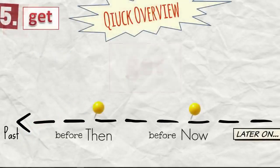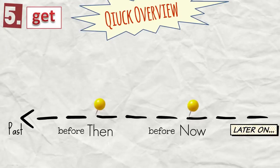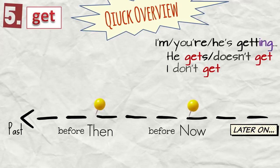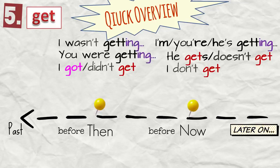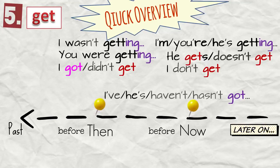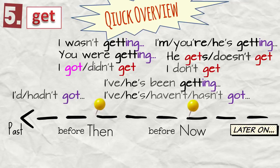Get. Quick overview again. I get. I don't get. He gets. He doesn't get. I'm getting. You're getting. He's getting. I got. I didn't get. I was getting. I wasn't getting. You were getting. I've got. He's got. I've been getting. He's been getting. I'd got. I hadn't got. I'd been getting.